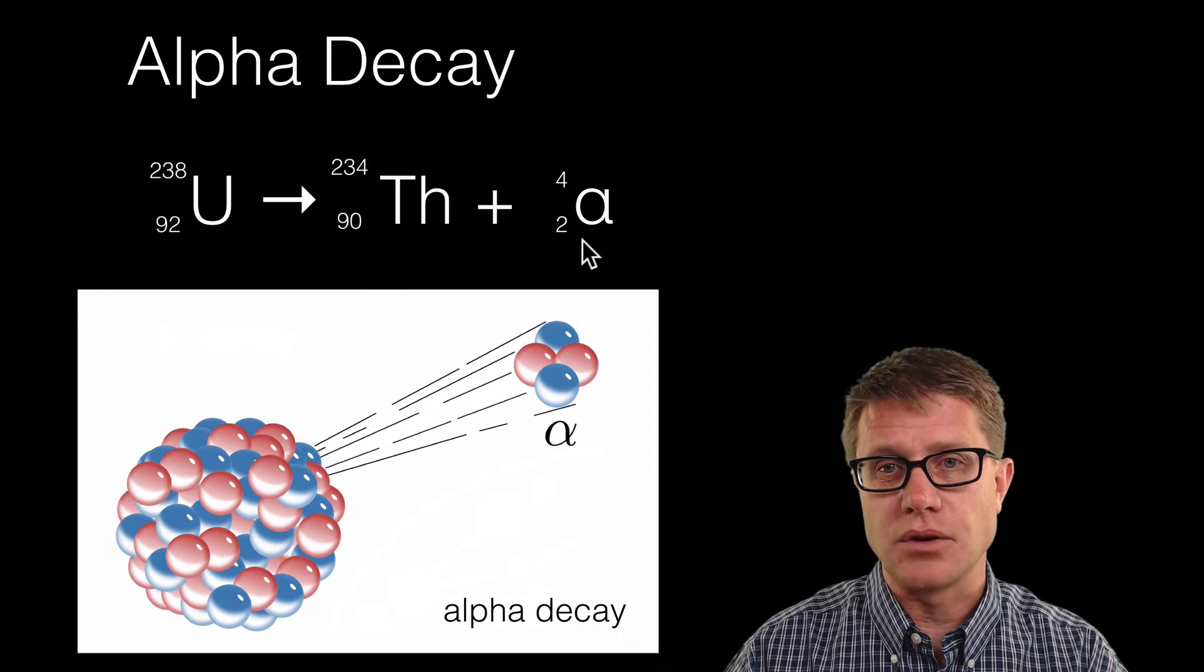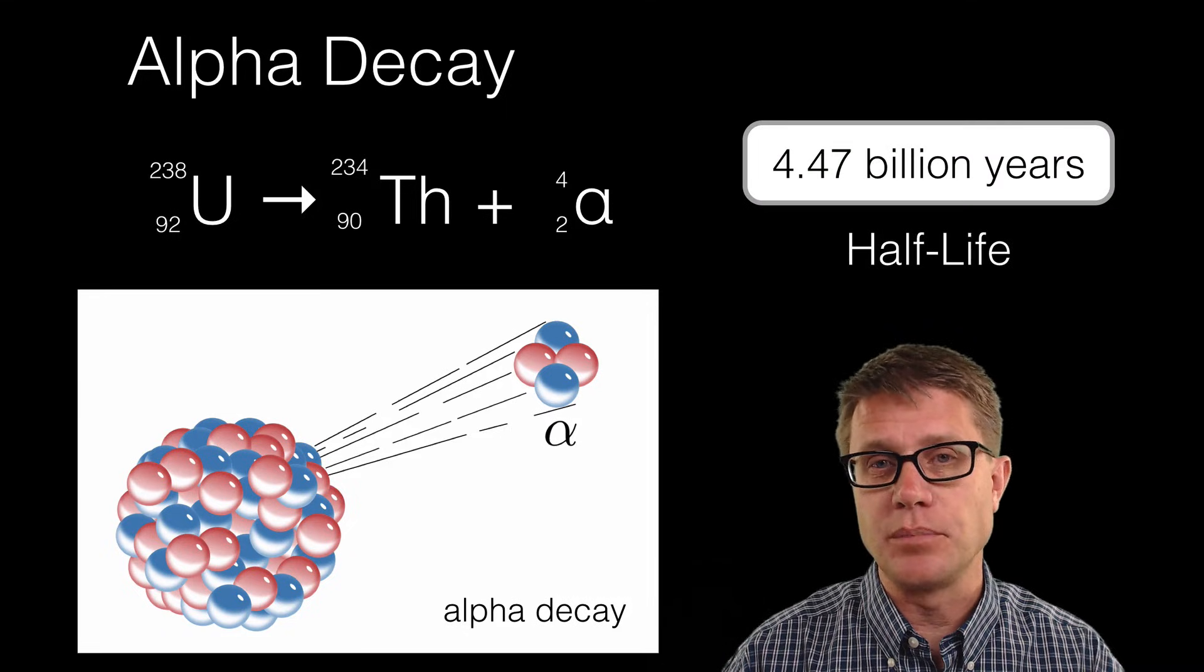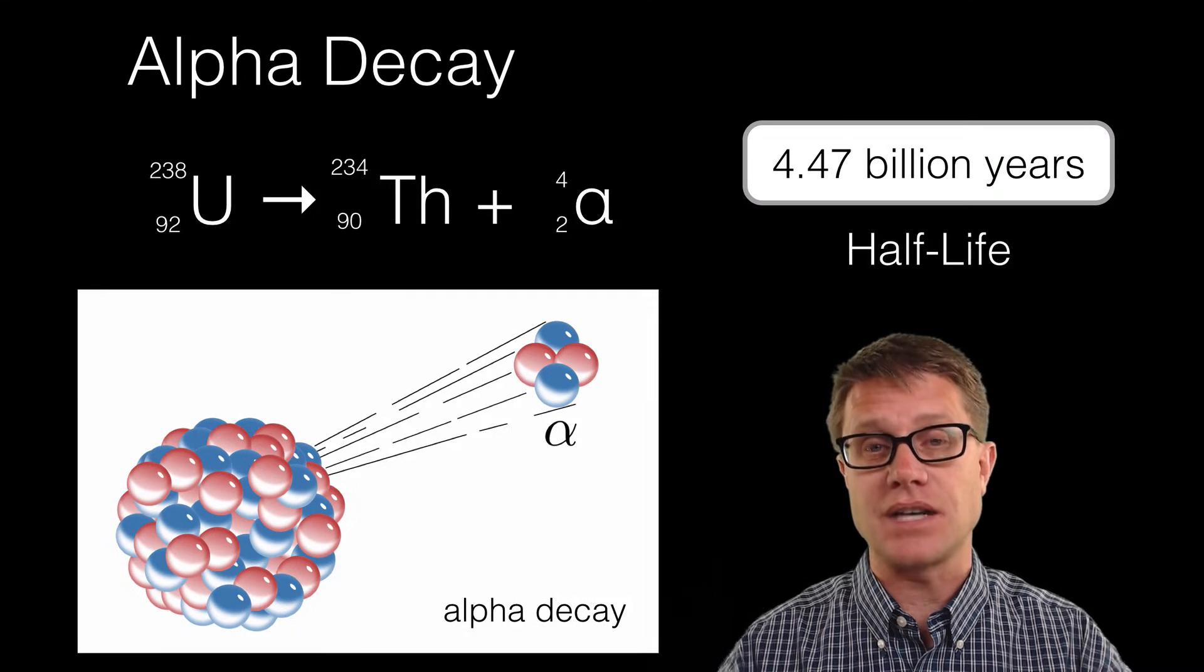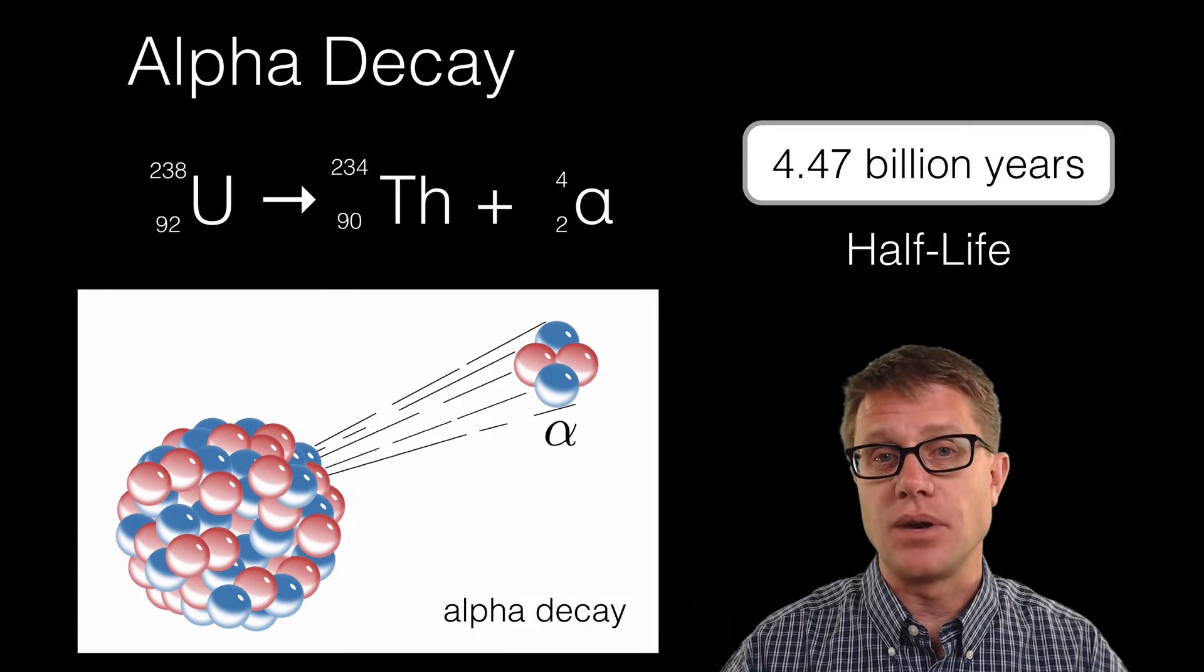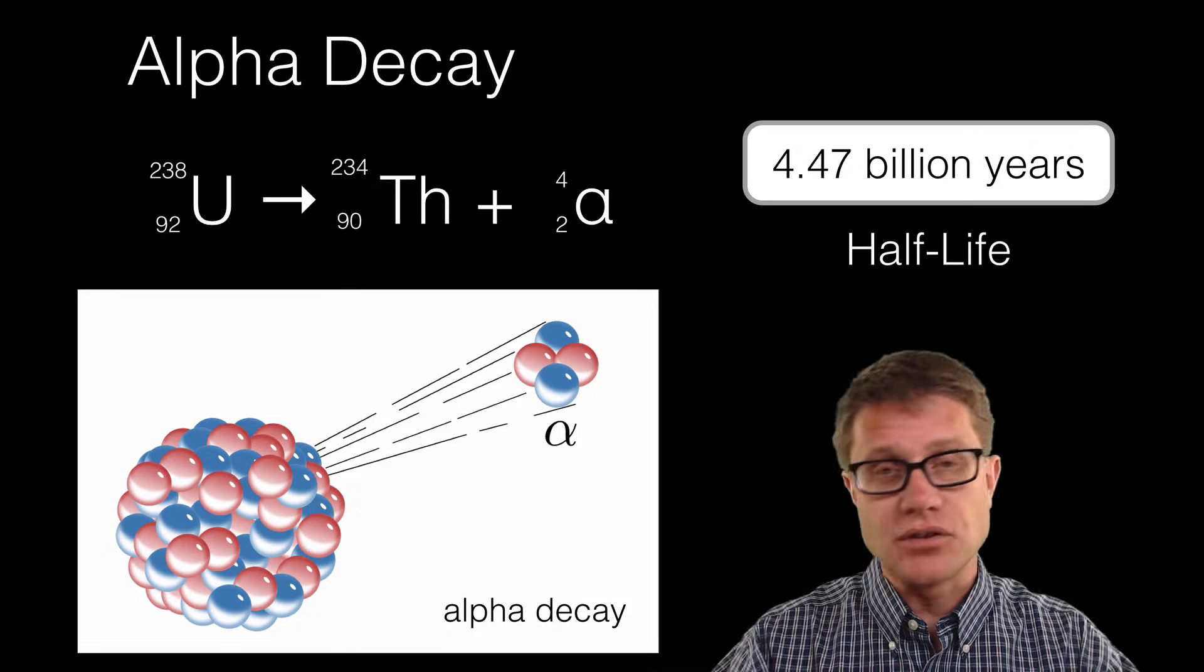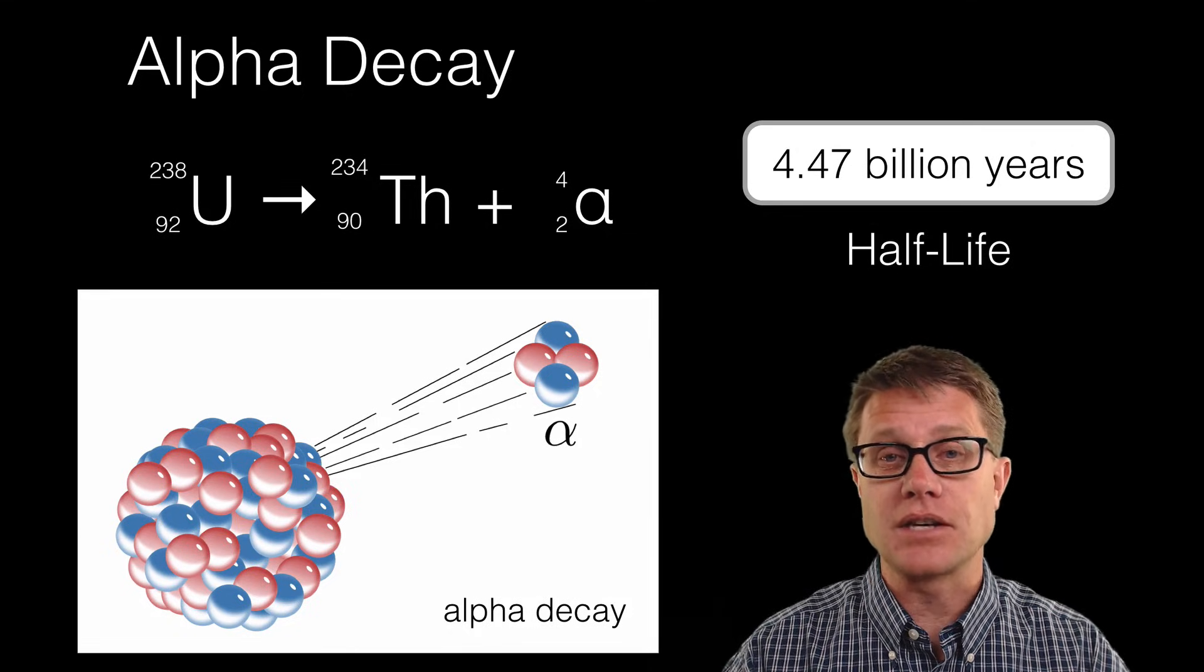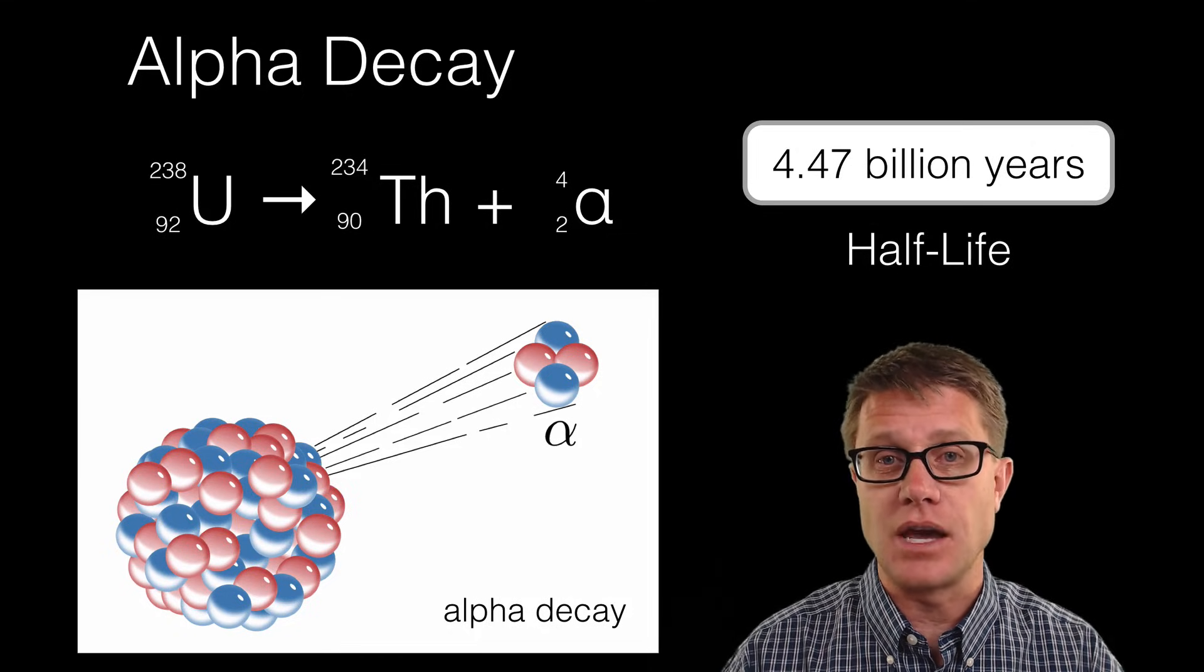Now what is the half-life of uranium-238 decay? It is 4.47 billion years. It takes a huge amount of time for just half of the uranium-238 to decay. But there are so many nuclei that we can actually measure this, and this is how we determine the age of the earth.